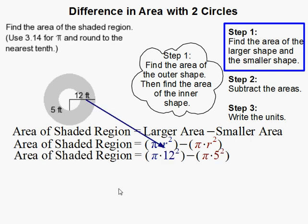Then I substitute, and this 12 is from here—it's given. The radius is 12 feet there, and the smaller one is 5.